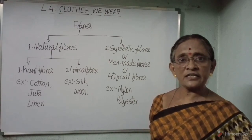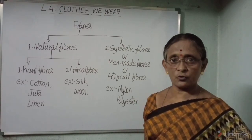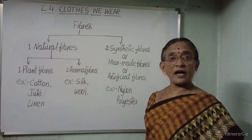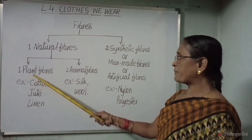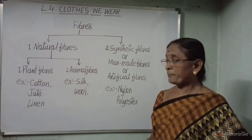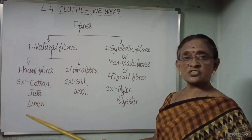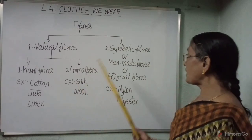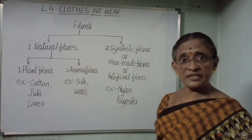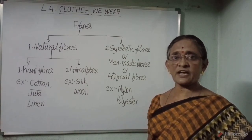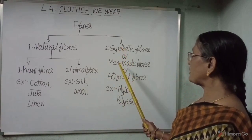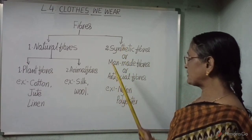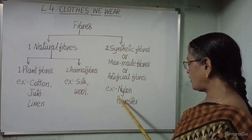Fibers are mainly classified into two groups: natural fibers and synthetic fibers. Natural fibers are again divided into two groups: plant fibers and animal fibers. Plant fibers are cotton, jute, and linen. Animal fibers are silk and wool. Synthetic fibers are made up of chemical substances, so they are also called man-made or artificial fibers. Examples of synthetic fibers are nylon and polyester.